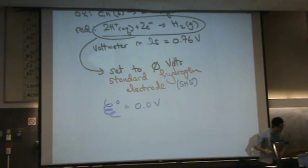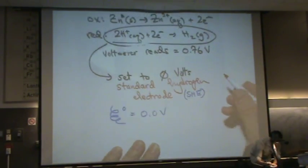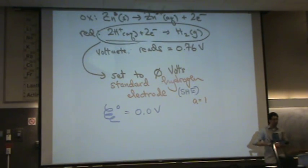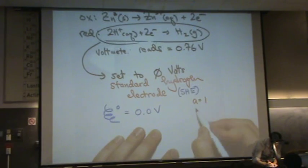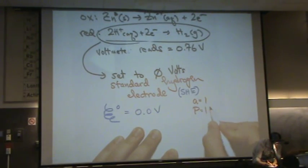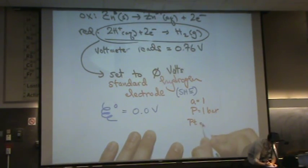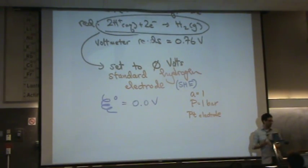A couple stats about this. The activity equals 1 for the standard hydrogen electrode. That means the concentration of H+ is 1 molar. And the pressure is 1 bar. So the H2 gas is 1 bar. And the electrode, we've got platinum electrode. So just a couple pieces of information. You're not really going to use that, but that's the standard conditions, if you will.